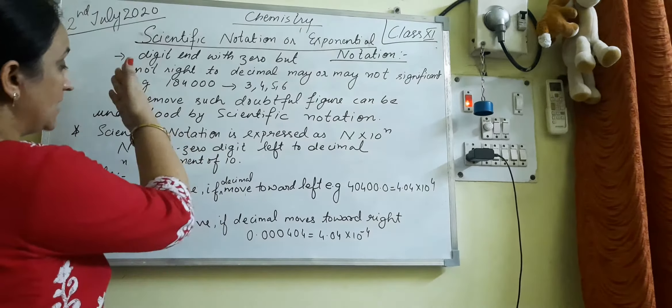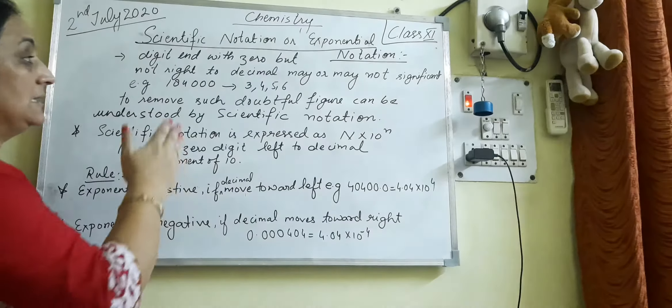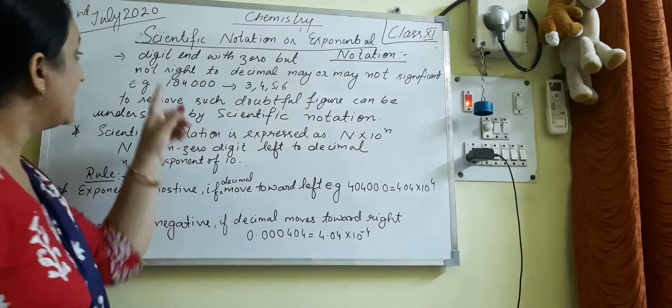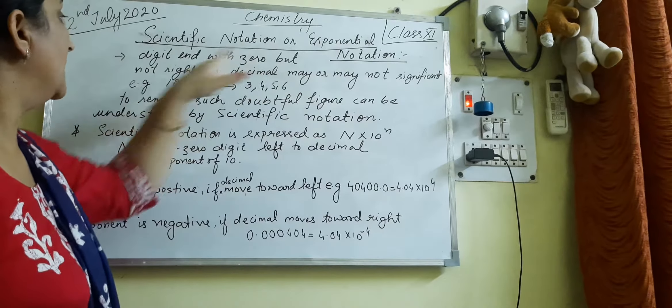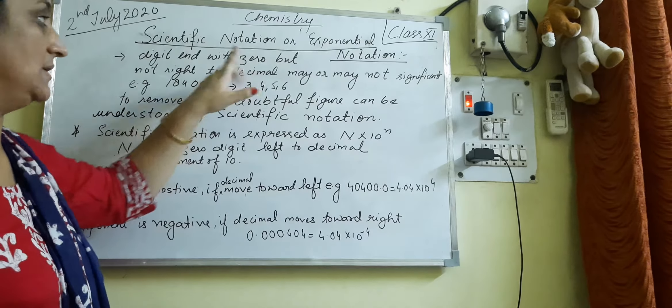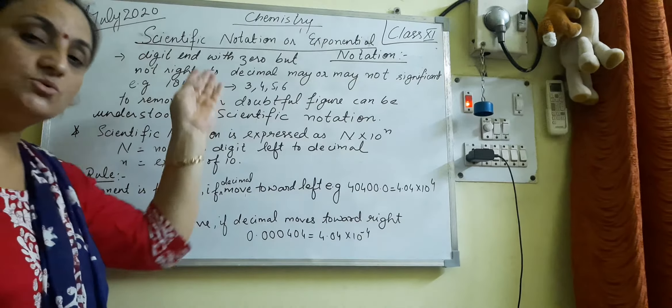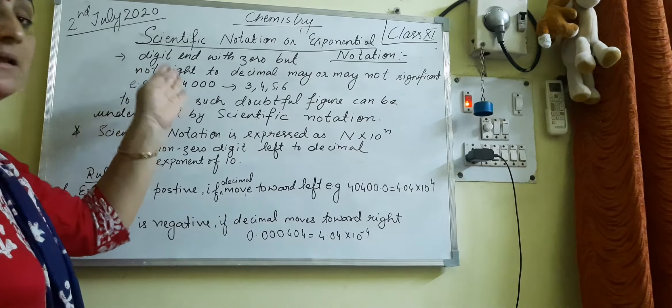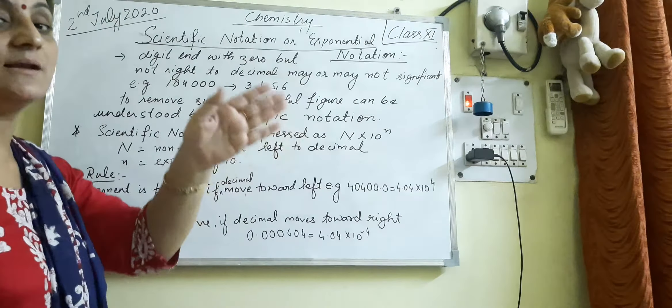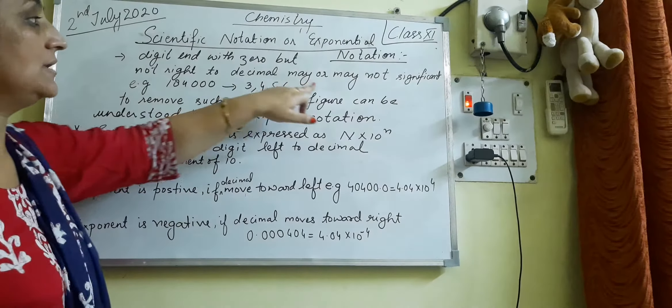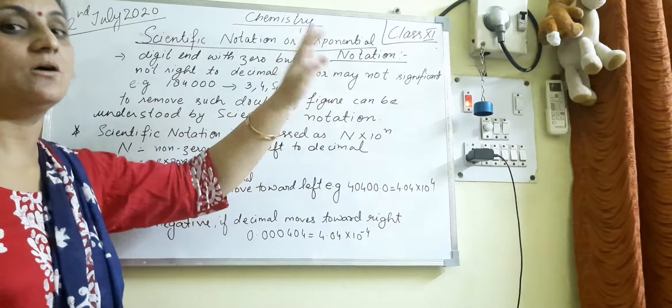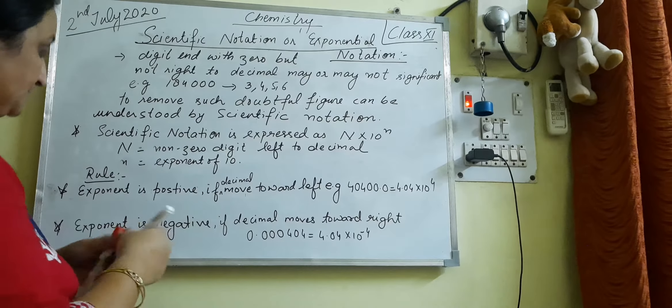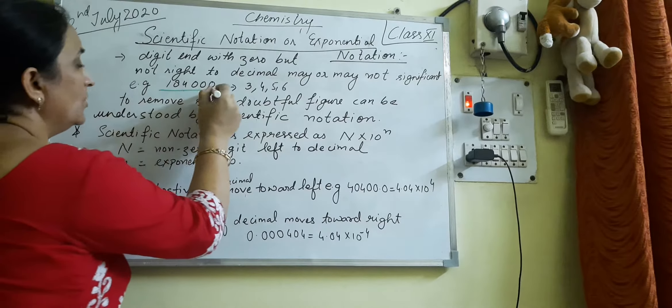Actually we have already seen in the fifth point of significant figures, when a digit ends with zero but not right to the decimal, the number ends with zero and it does not have a decimal point on the right side, so we can say that significant figures are not clear.